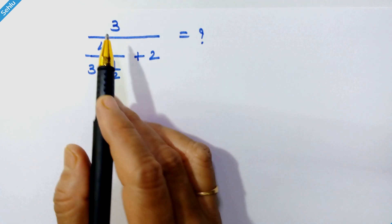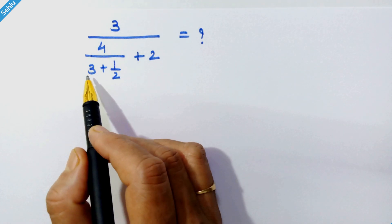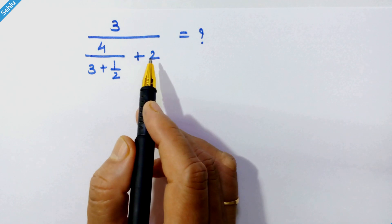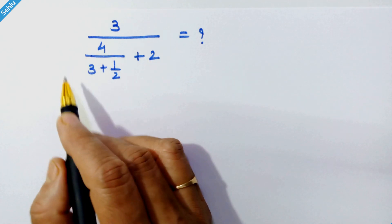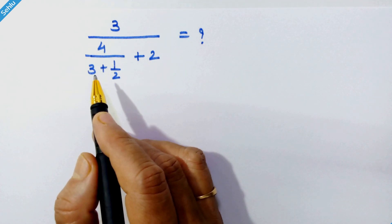Hello friends. Here we have 3 upon 4 upon 3 plus 1 upon 2 plus 2. We need to reduce this complex fraction into a simplified fraction.